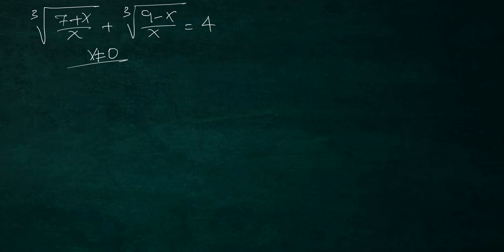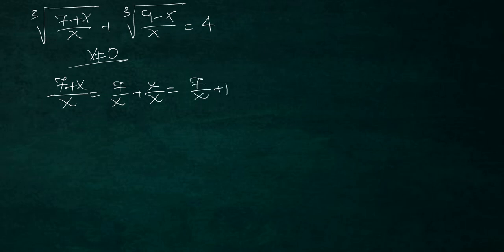Now I'm going to make some simplifications. We have (7 + x) over x, so let's write this as 7/x plus x/x, which gives us 7/x + 1. Doing the same thing, (9 - x) over x becomes 9/x minus x/x, which is 9/x - 1.